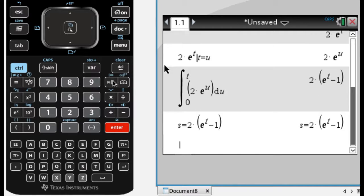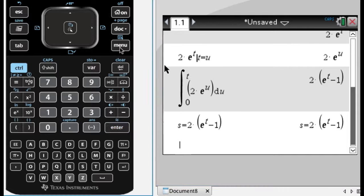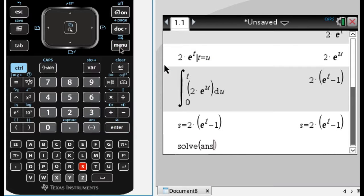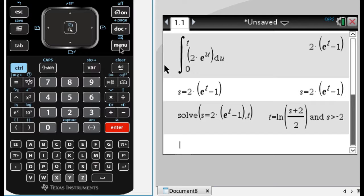And what I want to do now is I want to solve this for t. So I'm going to do menu 3, 1, and the answer for t, so I've done that. It adds this restriction that s has to be greater than negative 2. The original problem, I didn't write it, but t was greater than or equal to 0, so that's actually not an issue for us.